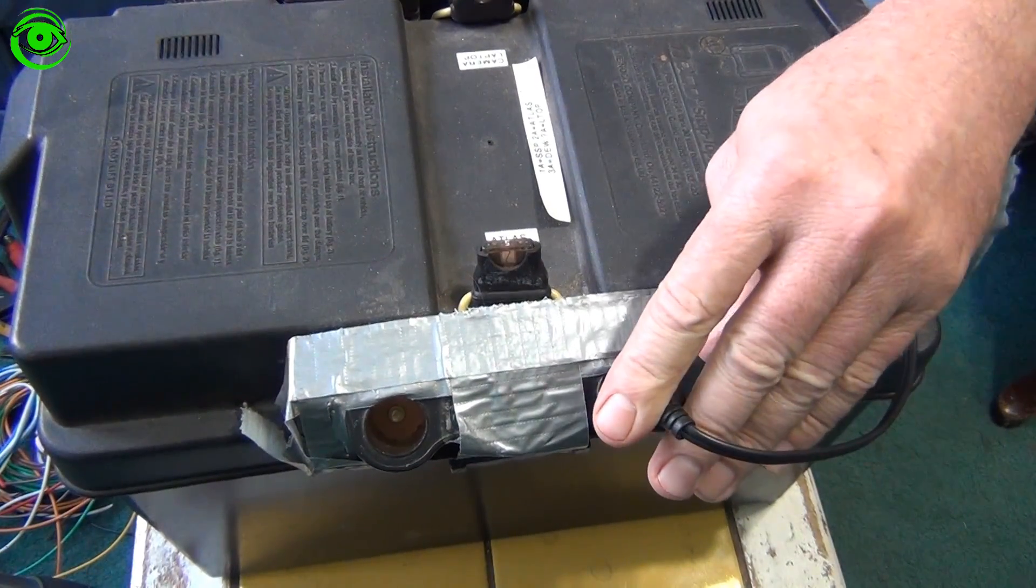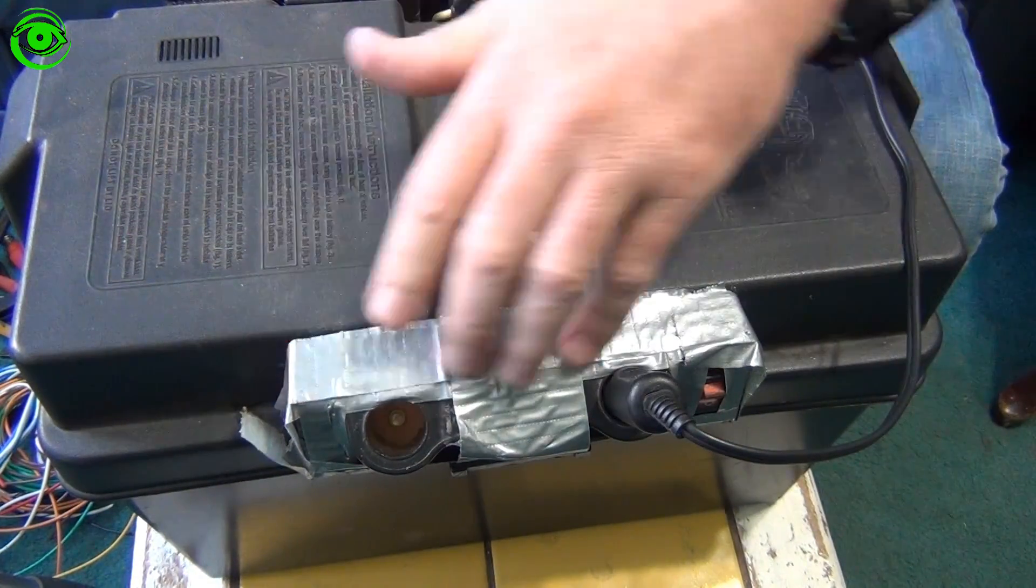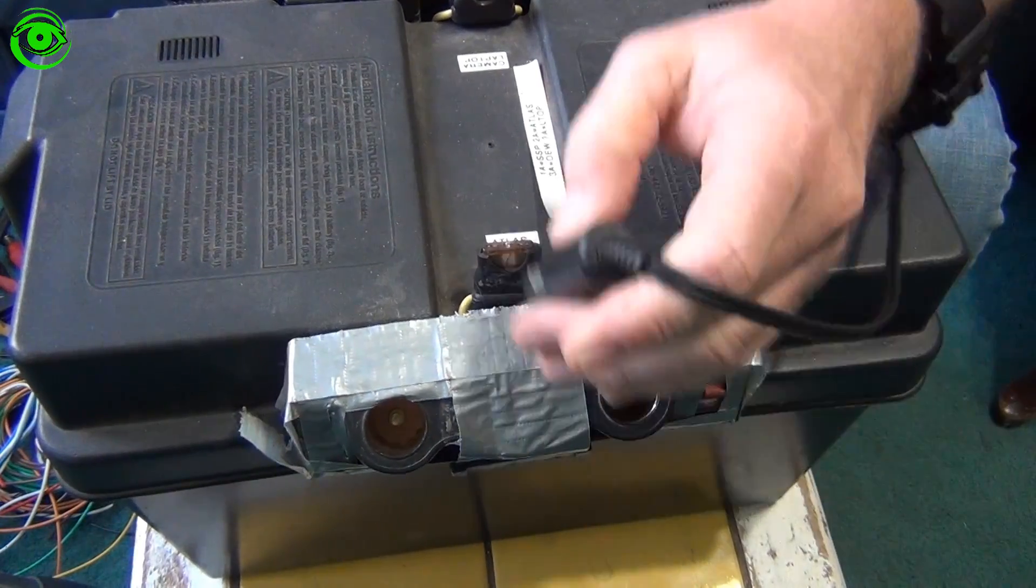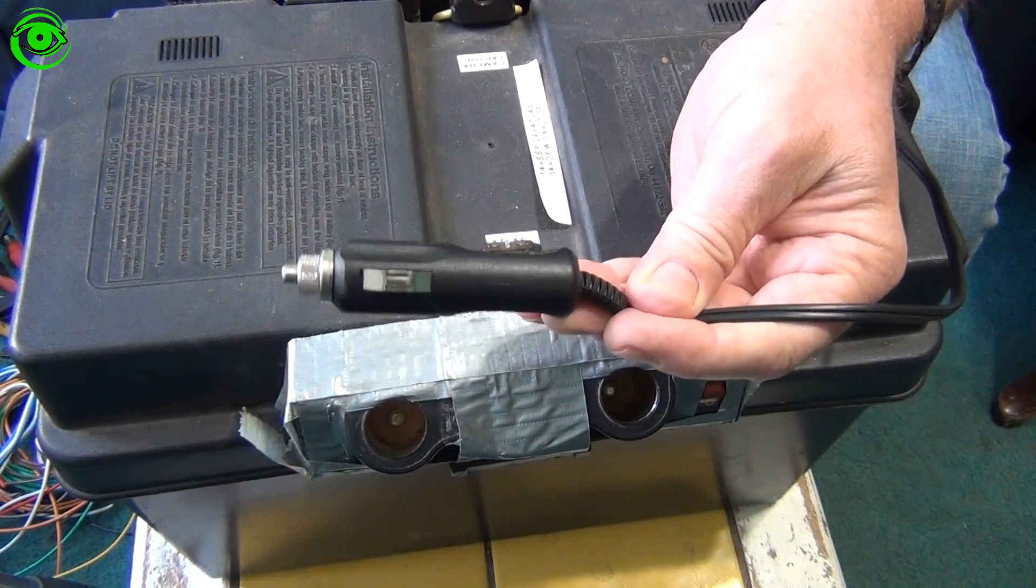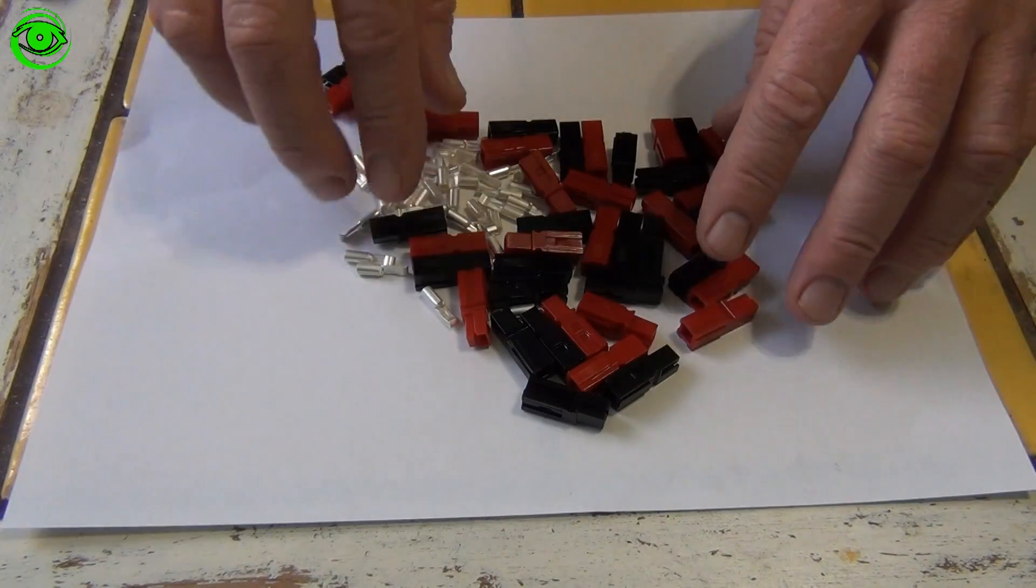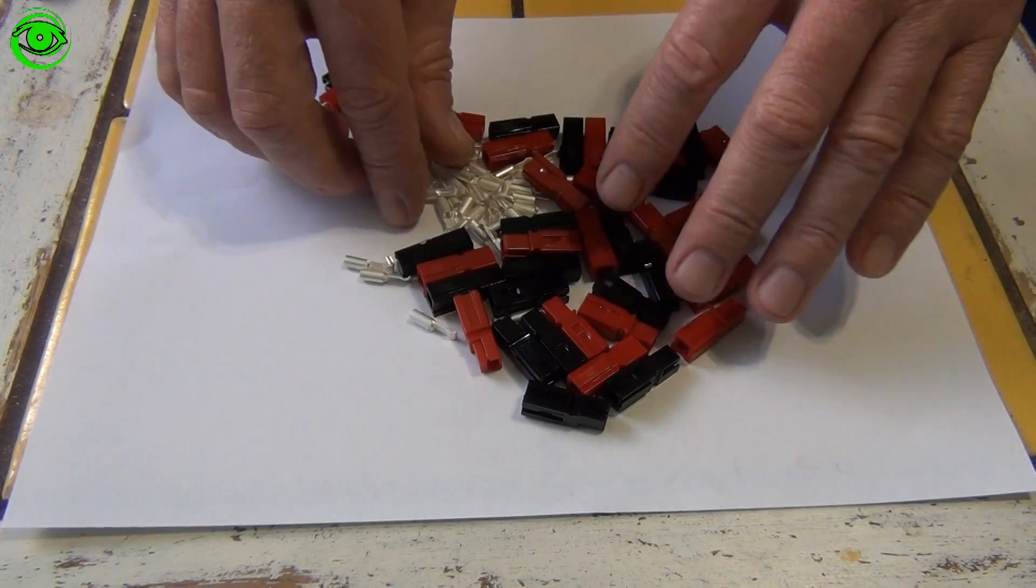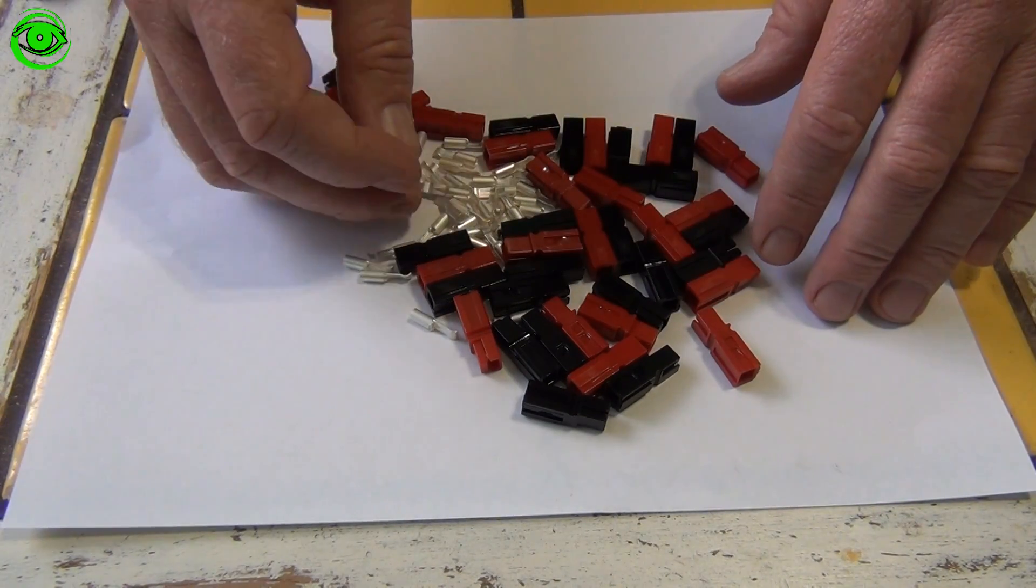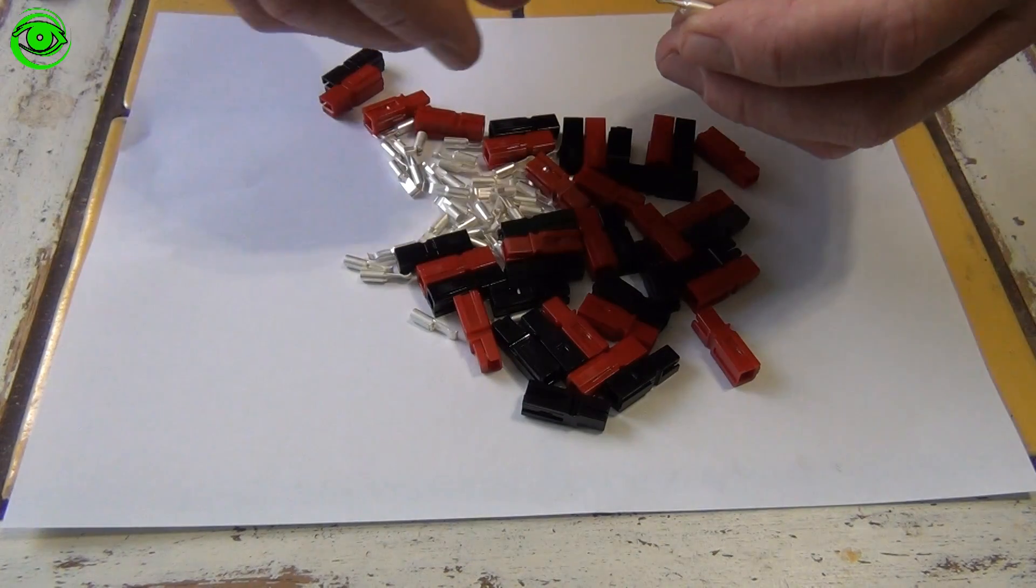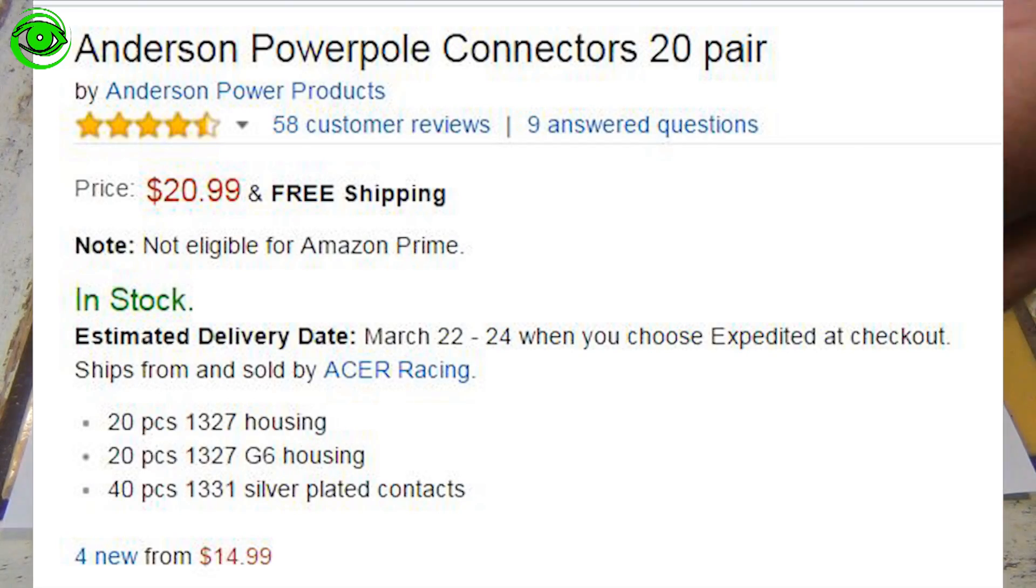I'm going to replace the cigarette lighter adapters with Anderson Power Pull Connectors. This bag has 20 plastic connectors and 20 of these little clips that lock onto one another, which helps hold them in place.